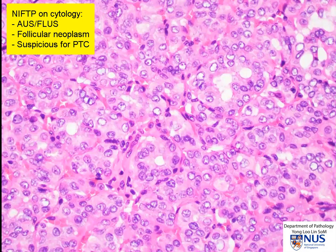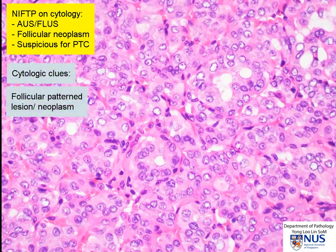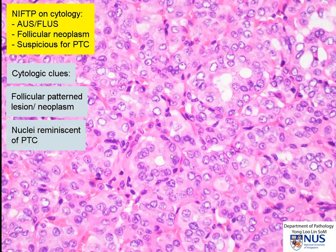It is important to flag this up as a potential differential when being considered on cytology. Essentially, when we see a follicular-patterned neoplasm with nuclear features that are worrying for papillary thyroid carcinoma, exactly as we saw in the FNA of this tumor.